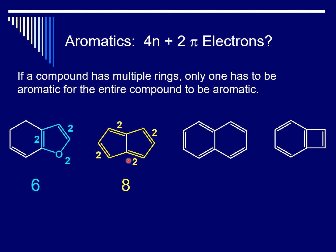The third compound is interesting in that the ring on the left clearly looks like benzene, meaning it's aromatic with six pi electrons. Thus, the entire compound is aromatic. We could stop there, but there is another way to look at this molecule: the outer ring of atoms. This larger ring has four more pi electrons, bringing the total to ten. Ten is also a Hückel number, so this just reinforces that the compound is aromatic — there are just a couple of ways we can arrive at that.